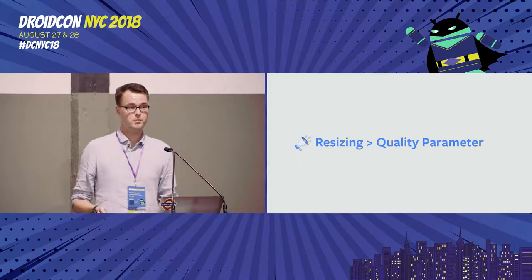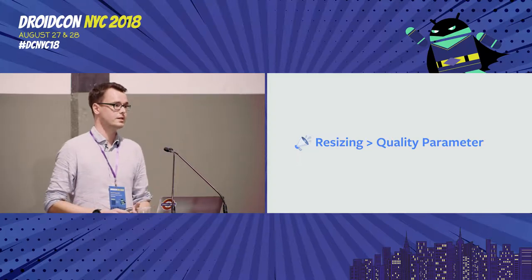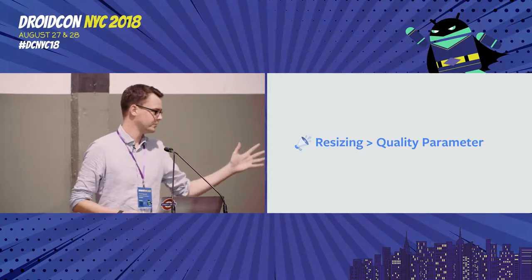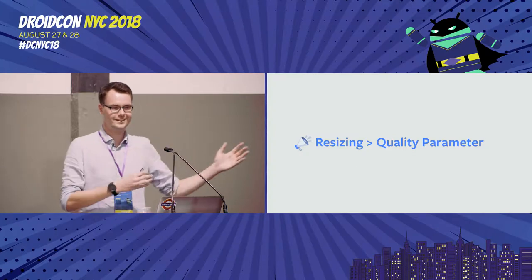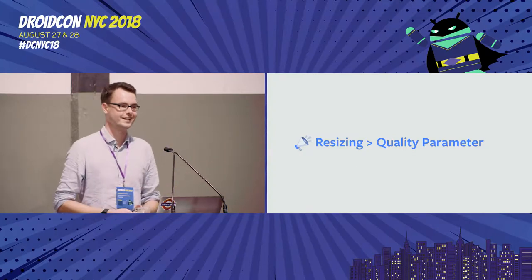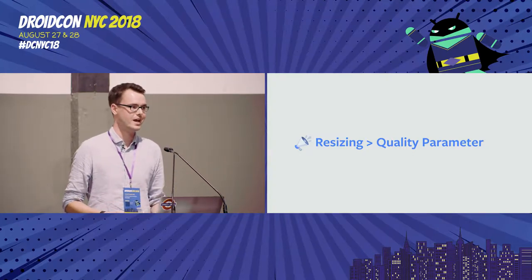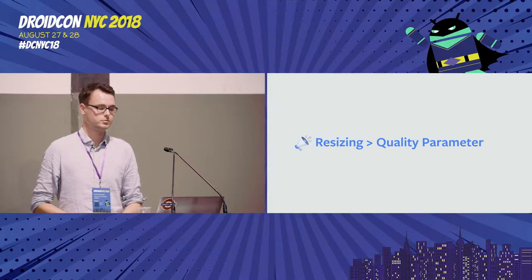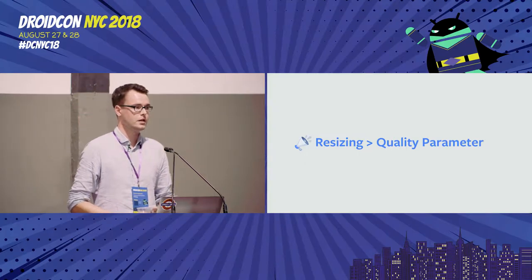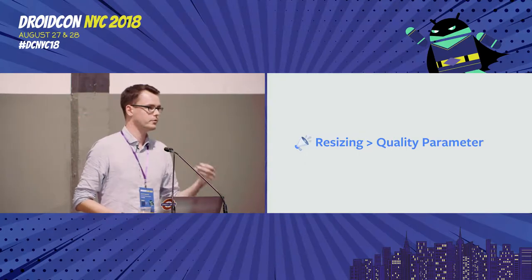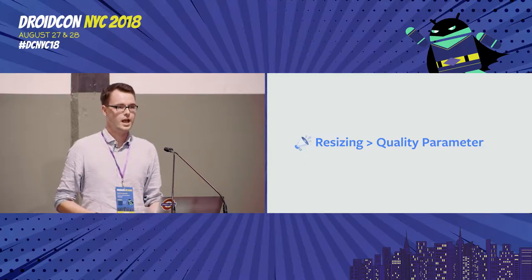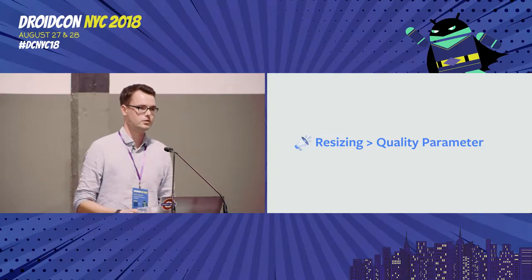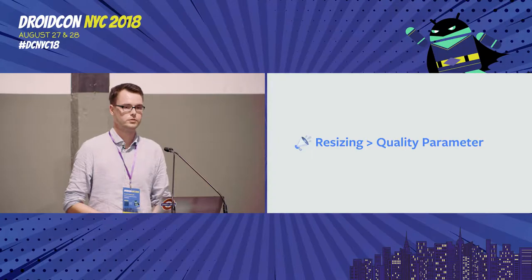Probably the most important takeaway of this talk — and if you should remember one slide, this is it — is that resizing has the biggest impact you can have on making your images smaller. Twiddling with encoder parameters is a good secondary step, but the first thing you should do is make the resolution smaller.